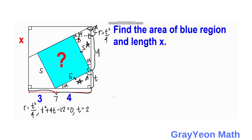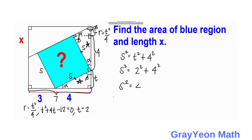Now we are ready to find the area of the blue square. Using the Pythagorean theorem, s squared equals t squared plus 4 squared. With t = 2, we get s squared equals 2 squared plus 4 squared, which is 4 plus 16, so s squared equals 20 square units.